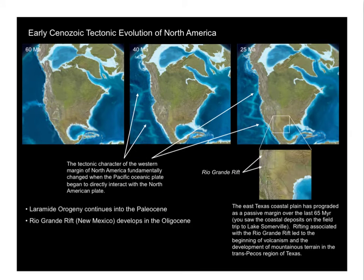Before we move on to the rest of the world, let's take a look at what was happening in North America. Early on in the Cenozoic, North America starts with continued convergence and subduction along its Pacific margin and continued rise of the Laramide Orogeny, which started in the Cretaceous — part of what lifted chunks of the Rocky Mountains. However, in the Oligocene, a change occurs from compressional tectonics in western North America to extensional tectonics, tied to the opening of the Rio Grande Rift. Much of what is now East Texas was deposited through this portion of the Cenozoic — these are the sediments exposed at Lake Somerville that you studied during the field trip.